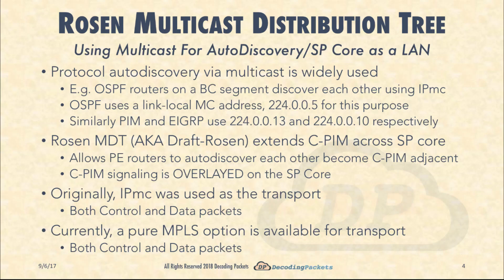What the Rosen MDT model does is treat the SP core as if it were a LAN. Protocol auto-discovery via multicast is already used by protocols like OSPF — OSPF routers on a broadcast segment discover each other using IP multicast, sending and listening for hellos on 224.0.0.5. This allows routers to auto-discover each other and form adjacencies without explicit configuration. Rosen MDT uses these same fundamentals to extend CPIM across the SP core.